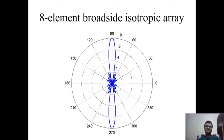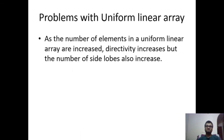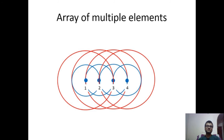These minor lobes are unnecessary and wasteful — they waste the energy provided to the antenna. So we can conclude that a uniform linear array has the advantage that increasing elements increases directivity, but it will also increase the side lobes.